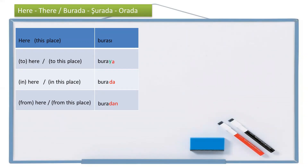The root is bura. If I'm trying to say 'here' or 'this place', I use burası. If I'm trying to say 'to here' or 'to this place', I say buraya — the dative suffix with a buffer letter. If I'm trying to say 'in here' or 'in this place', I say burada — the locative case. And if I'm trying to say 'from here' or 'from this place', I say buradan — the ablative case. So there are four situations: burası, buraya, burada, and buradan.